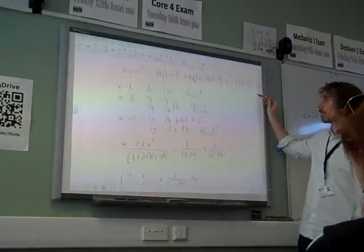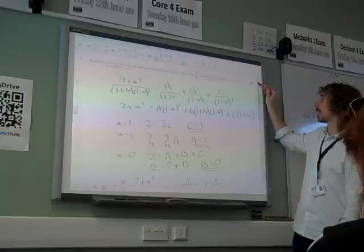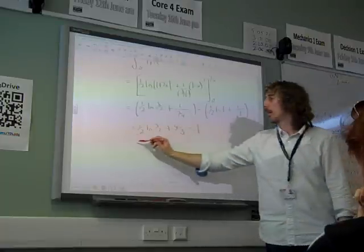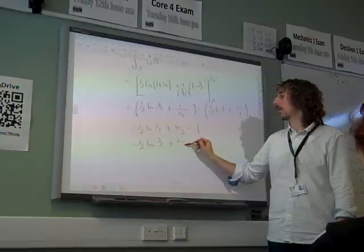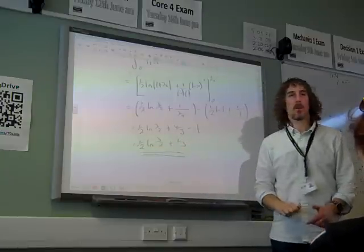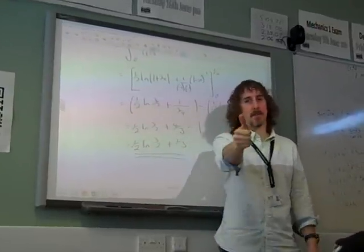And we had to show that we were not just fudging it to get that final answer, but we have got that, because we've got a half ln 3 over 2 plus a third, as we were expecting to get. And that's maths.